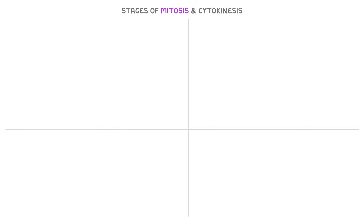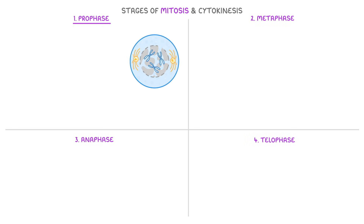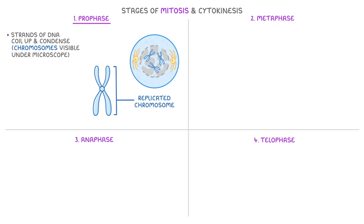Mitosis is a continuous process typically divided into four main stages: prophase, metaphase, anaphase, and telophase. Starting with prophase, during this stage the long thin strands of DNA coil up and condense, which makes the chromosomes visible under a microscope. Because DNA replication has just happened during interphase, each chromosome will appear as a replicated chromosome, meaning it contains two identical sister chromatids.